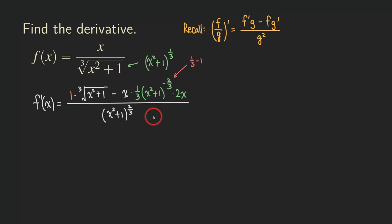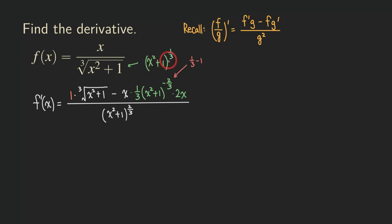So now the derivative is done. But sometimes we do want to simplify and turn it into a nicer form. There is a negative exponent involved, so if we are to find critical numbers, this is not nice to work with. So we want to simplify by turning it into a form with a fractional exponent.